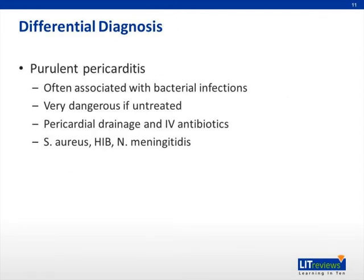Purulent pericarditis is most often associated with bacterial infections including pneumonia, epiglottitis, meningitis, or osteomyelitis, and signs and symptoms of the primary infection should be expected. It can lead to acute tamponade and death if untreated. Treatment may involve pericardiocentesis and intravenous antibiotics; closed aspiration can yield a diagnostic sample and be life-saving, but open drainage and removal of adhesions may be necessary to prevent recurrence. The most commonly implicated organisms are Staphylococcus aureus, Haemophilus influenzae type B, and Neisseria meningitidis. Tuberculous pericarditis is very rare in children. Immune complex mediated pericarditis may occur about a week after initiation of therapy for severe systemic infection with meningococcus or H. flu; therapy includes anti-inflammatory agents.